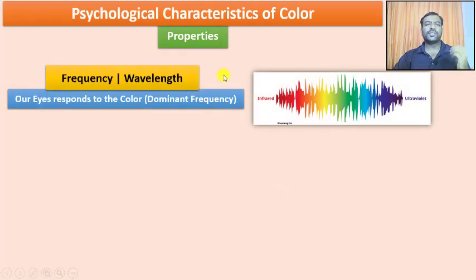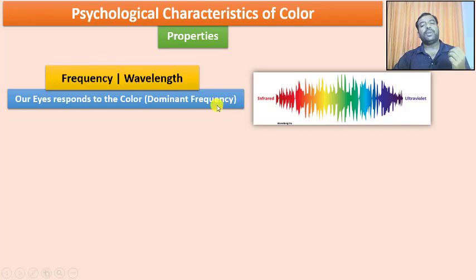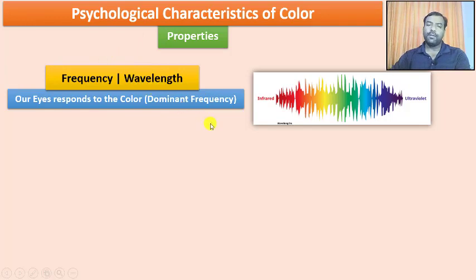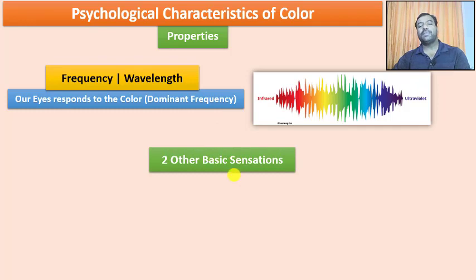The first property is frequency or wavelength. Our eyes respond to color based on the dominant frequency — whichever frequency dominates in the visible wavelength we call this the dominant frequency. That dominant frequency is observed by our human eyes, and that particular color will be visible on any object. This is the main property of color. Other than this, we have two more basic sensations or color properties.